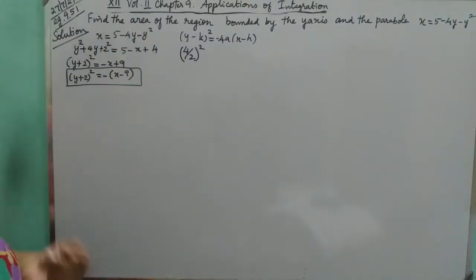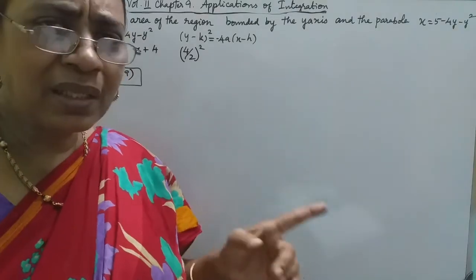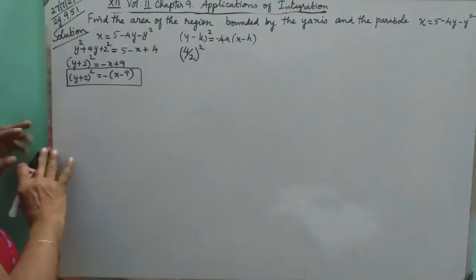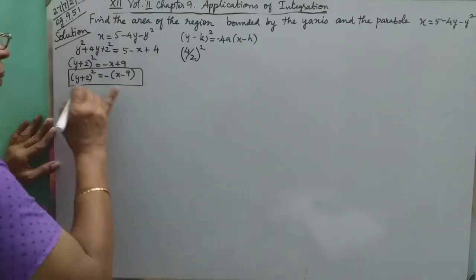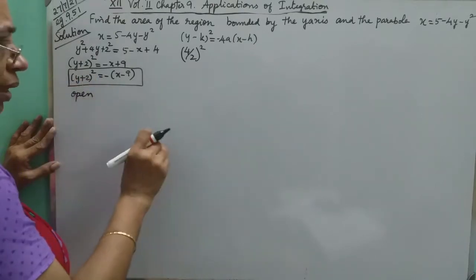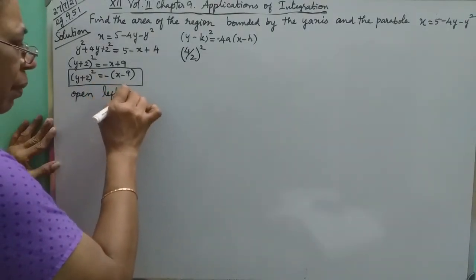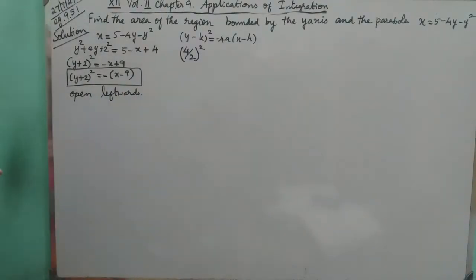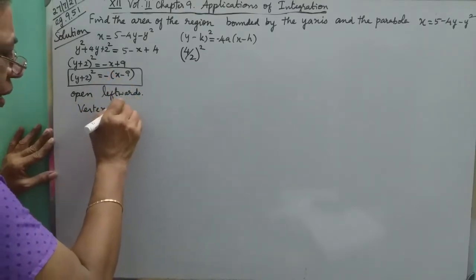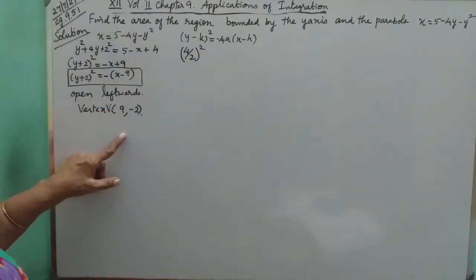If you want to see the vertex, you can identify it from the standard form. The vertex will be determined from the equation. So from the standard form, the vertex can be read off directly.